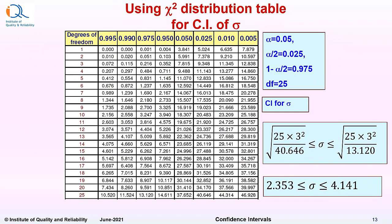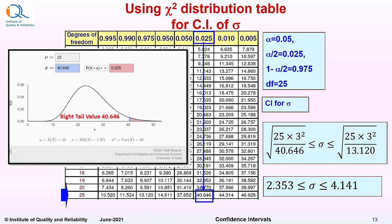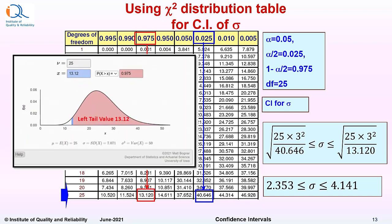This is the table for chi-square distribution for confidence interval of population standard deviation sigma. For 0.025 alpha by 2, the chi-square value for 25 degrees of freedom is given as 40.646. And for 0.975, the chi-square distribution value for 25 degrees of freedom is 13.12.